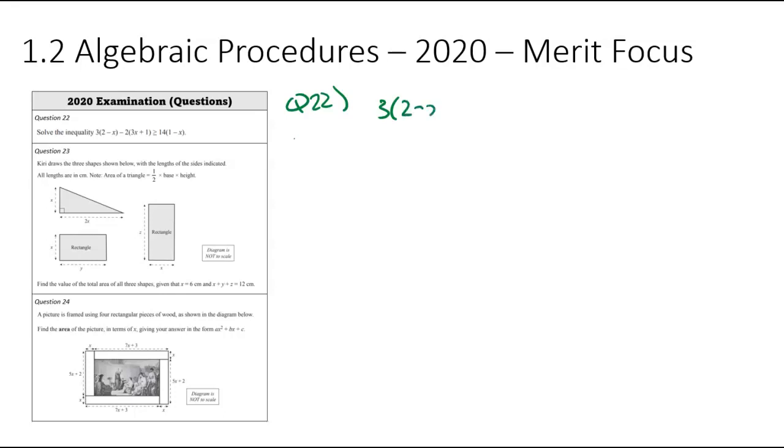So let's get into this 3, and then we've got x minus 2. We're then going to minus 2, 3x plus 1, greater than or equal to 14, 1 minus x. So heaps of brackets. Let's just expand everything, see what happens. I've got 6 minus 3x when I expand this. Then I've got minus 6 minus 2, greater than or equal to 14 minus 14x. Let's simplify what we can. So 6 minus 2 is 4.